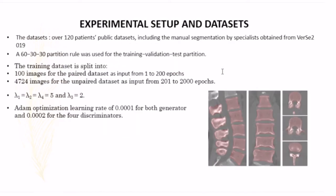For the experimental setup and datasets, we use over 120 patient public datasets, including manual segmentation by specialists obtained from Verse 2019. We use 60-30-30 partition rule for training, validation, and test. The training dataset is split into 100 images for paired datasets. We use the values for lambda 1, lambda 2, and lambda 4 as 5, and lambda 3 as 2. We also use ADAM optimization learning rate of 0.001 for both generators and 0.0002 for the four discriminators.